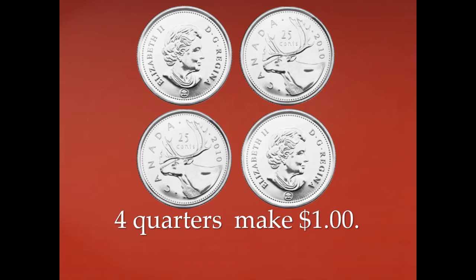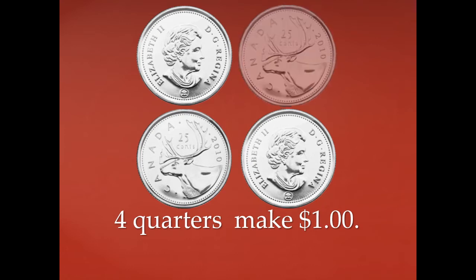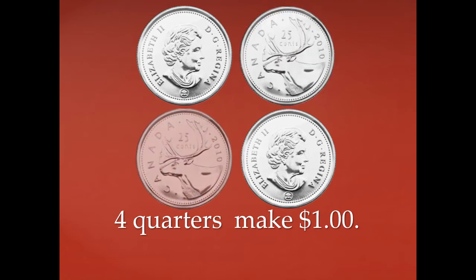On the tail side it says 'Canada,' and right between the caribou's antlers it says '25 cents.' It takes four quarters to make one dollar. Let's count by twenty-five as we count our quarters: twenty-five, fifty, seventy-five, one hundred! It takes four quarters to make one dollar because a dollar is one hundred cents.